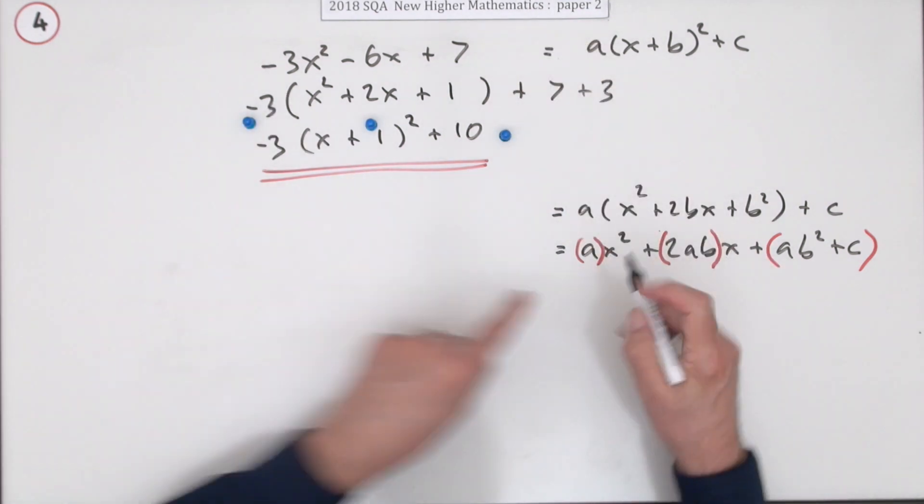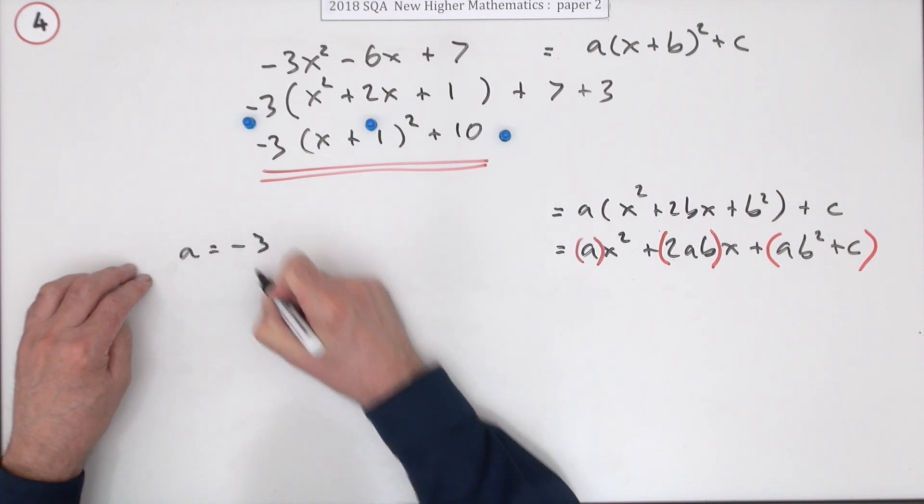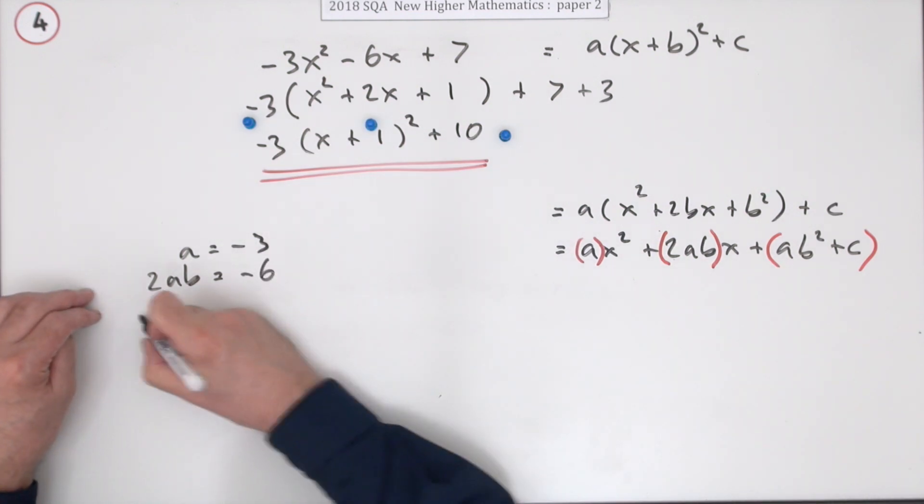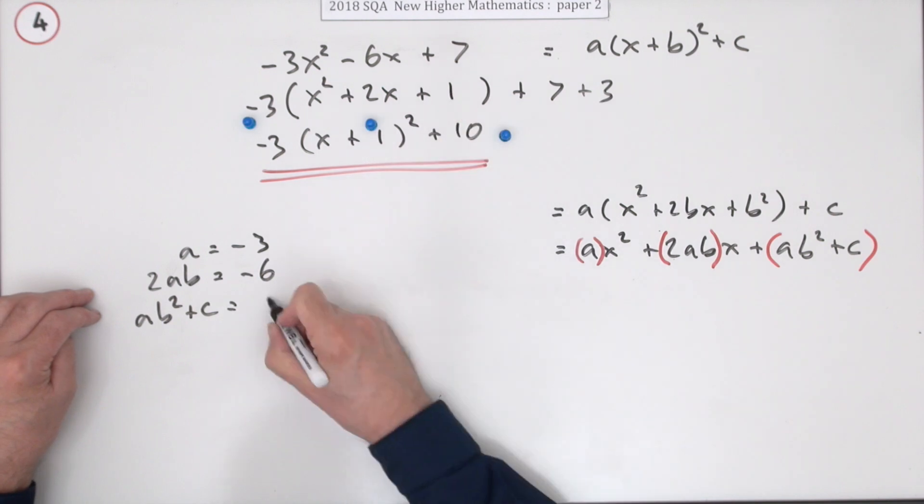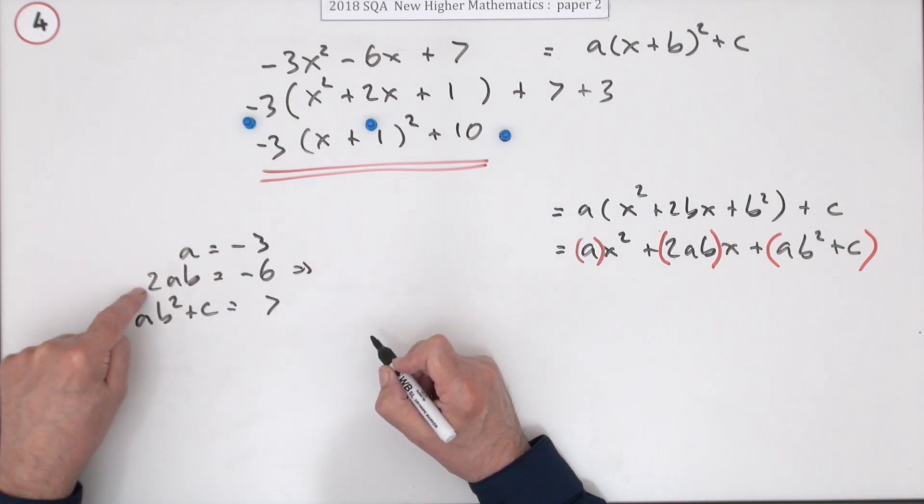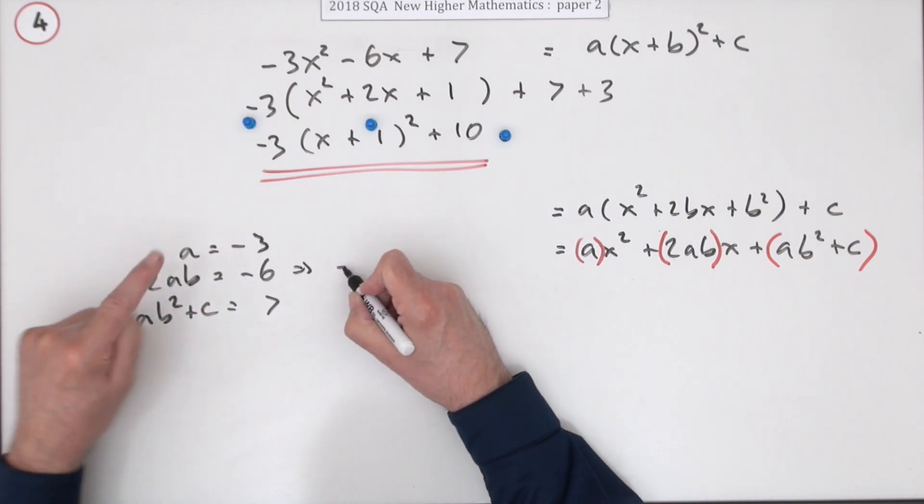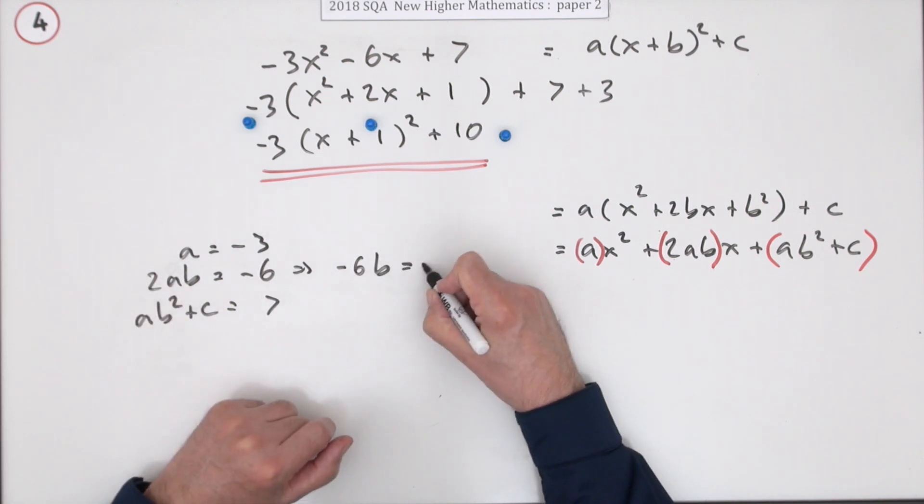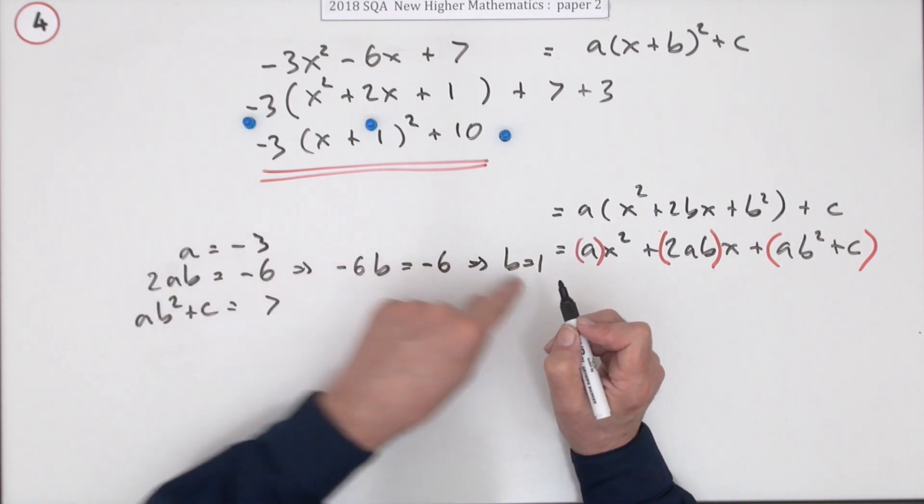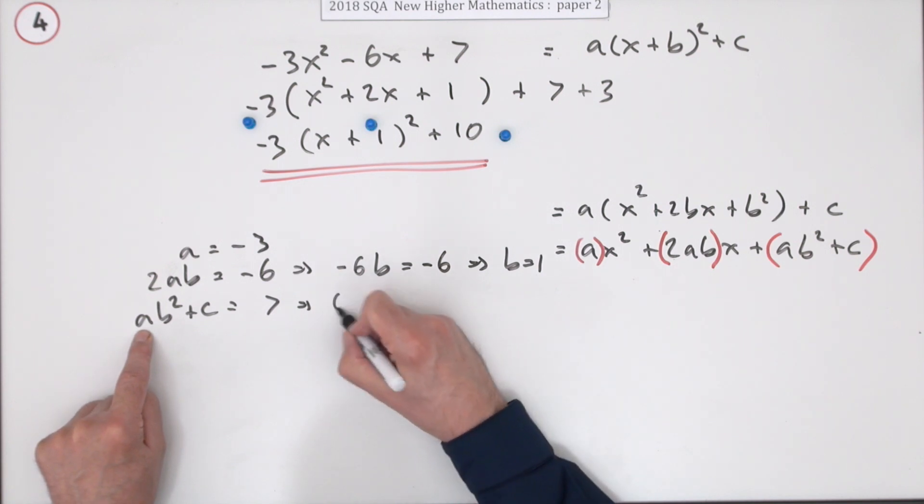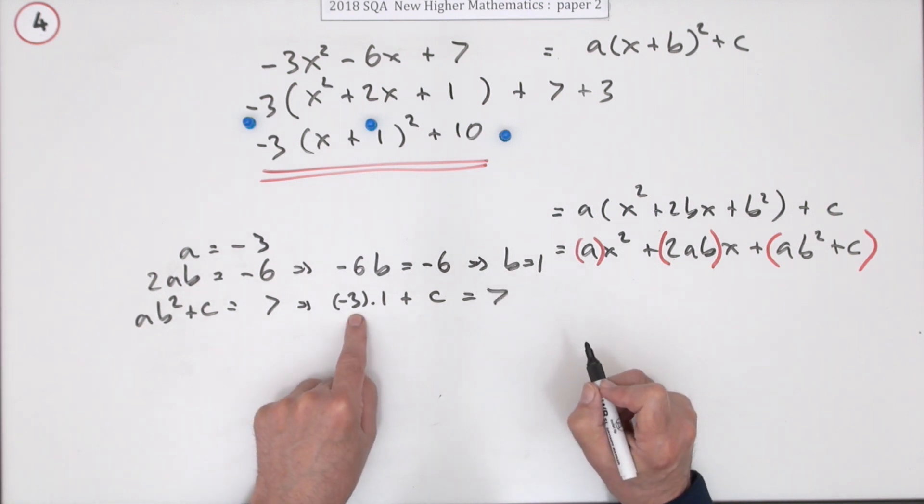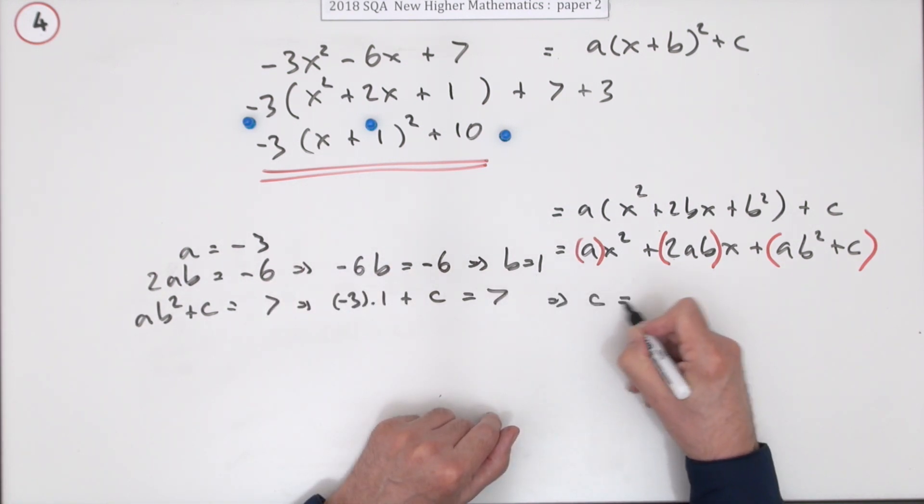And then equating that with the original one, you've got the A is negative 3, the 2ab is the negative 6, and the ab squared plus C is the 7. Quite a lengthy method, this one. You're better off just doing that. So from the first one, putting that in, 2 times A is negative 6, because it's 2 times negative 3. So negative 6b is negative 6, well, that just means B is 1. Putting both those values into this, you've got A is negative 3, B is 1. Plus C should make 7. Well, that's a negative 3 to go across as a plus 3, which means C is 10.